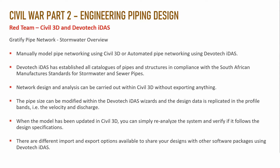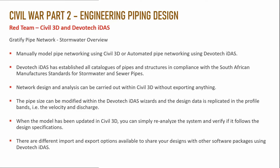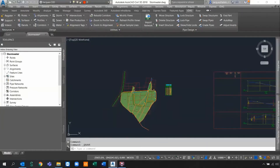The network design and analysis can be carried out entirely within Civil 3D without exporting anything. Pipe sizes can be modified within the Devotec IDUS wizard, and design data — for example velocity and discharge — is replicated directly in the profile band. This means less effort and much greater accuracy. When the model is updated in Civil 3D you can simply reanalyze the system to verify it still follows design specifications, and there are also import and export options available for sharing data with other software packages.